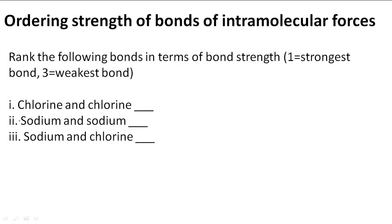So we have three examples, chlorine and chlorine, so Cl2. Sodium and sodium, so maybe a sodium crystal. And sodium and chlorine, which would be sodium chloride when combined in a bond.